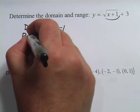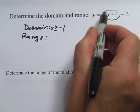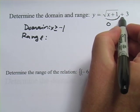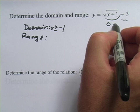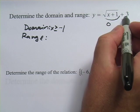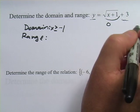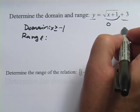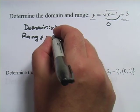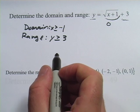Now the range is all the things that y can be, and you have to do a little more thinking. The smallest thing that can come out of the square root chunk is 0, because it can't be negative. And then we're always adding 3. So if I put in negative 1 for x, I get 0 plus 3, which is 3. If I put in 0 for x, I get 1 plus 3, which is 4. So the y values are always going to be 3 or greater — there's no way to get less than 3. So the range is y is greater than or equal to 3.